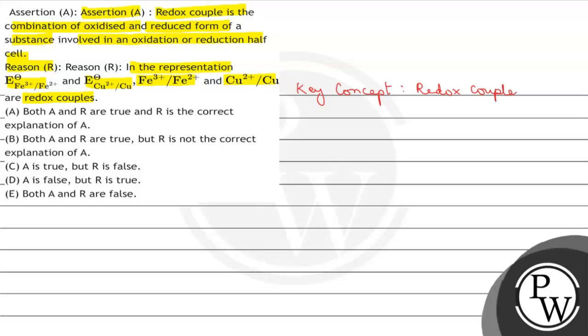Redox couple are the reactions in which oxidation and reduction takes place simultaneously. So that means redox reaction is a reaction in which one species oxidized and the other species reduce. Oxidation and reduction simultaneously occur.